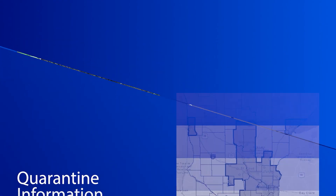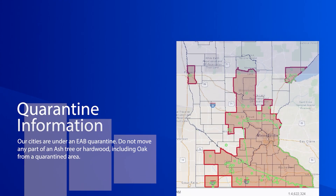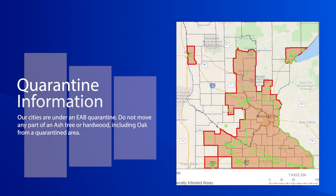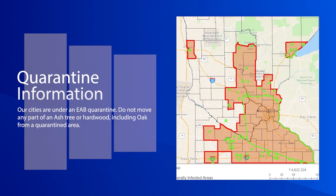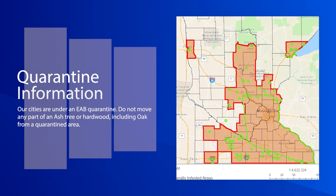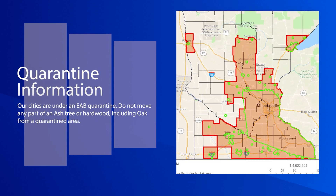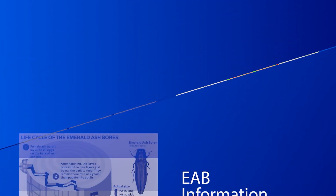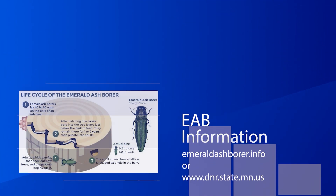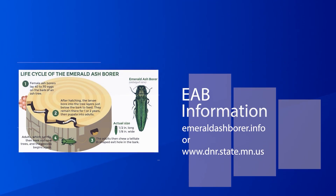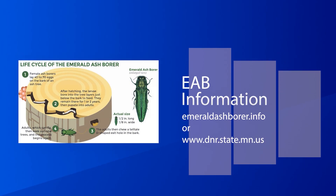Our cities are under an EAB quarantine. Do not move any part of an ash tree or hardwood, such as oak, from quarantined areas to non-quarantined areas.